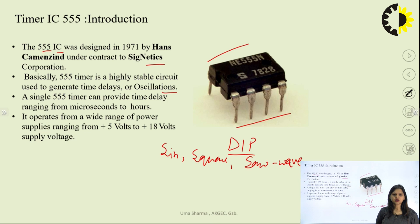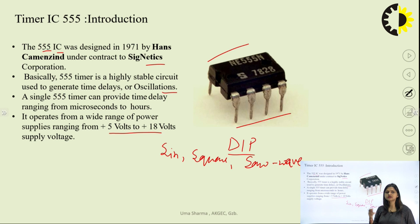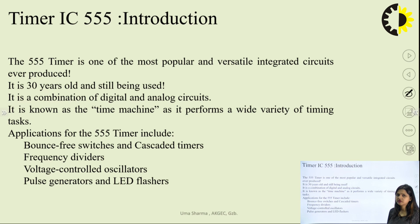With the help of this 555 timer IC, we can generate different kinds of waveforms. We can change the duty cycle, time period, and frequency of this waveform. This is a very popular IC that can operate over a wide range of supplies, from plus 5 volts to plus 18 volts. The timer is one of the most popular and versatile integrated circuits — very old but still very relevant.